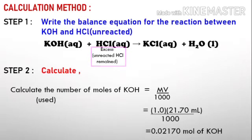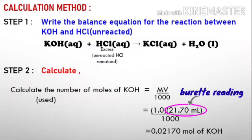Step number two: calculate the number of moles of KOH. The number of moles of KOH comes from the formula n = MV/1000. The molarity of the KOH is 1.0 molar, the volume reading that we use in this experiment is 21.7 mL divided by 1000, so the number of moles is 0.02170 mol of KOH.